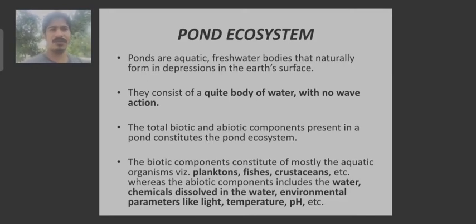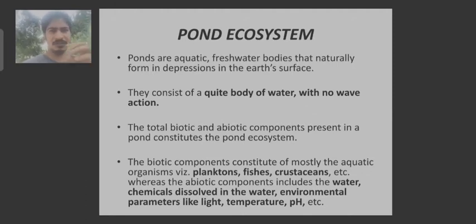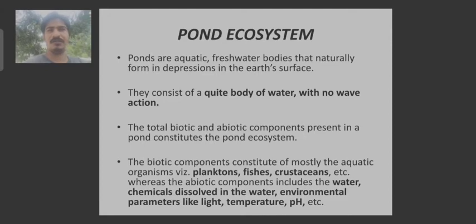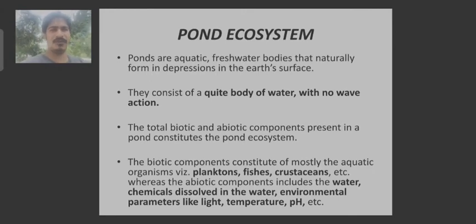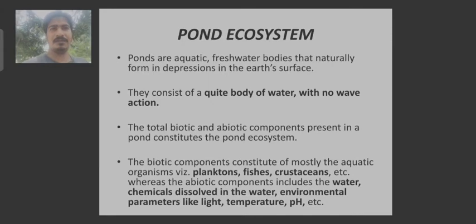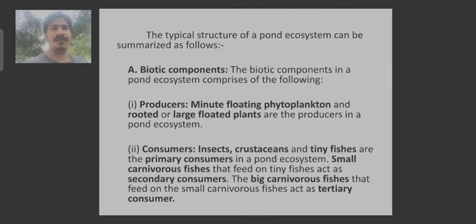The biotic components are mostly plankton, fishes, or crustaceans. Plankton are small groups of organisms that may come under the category of phytoplankton or zooplankton. Phytoplankton are related to plants, and zooplankton are related to animals. The abiotic components mostly include water, chemicals dissolved in the water, and environmental parameters like pH, temperature, etc.